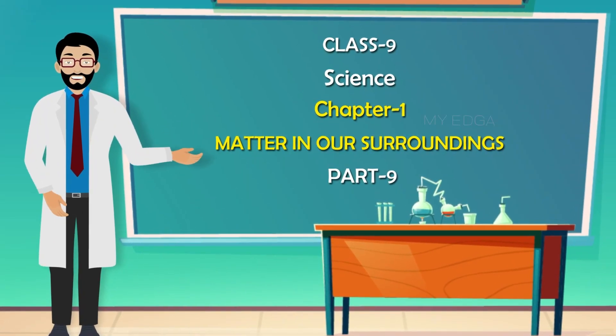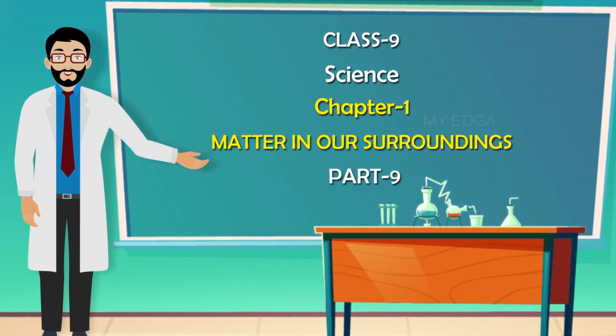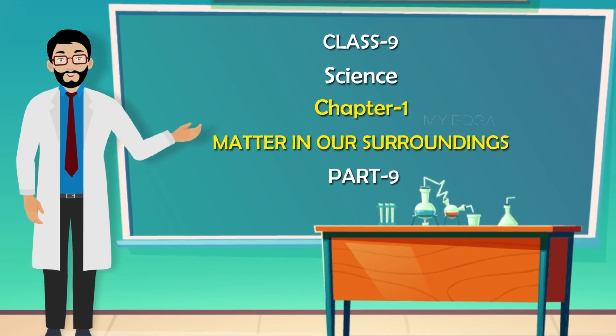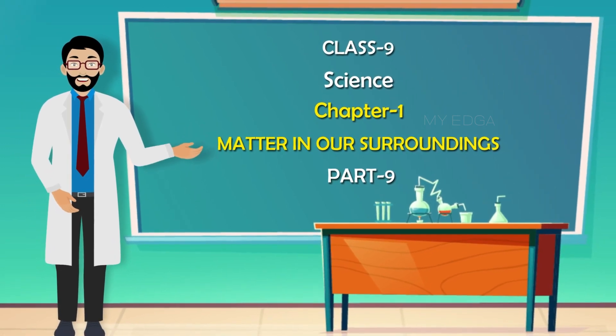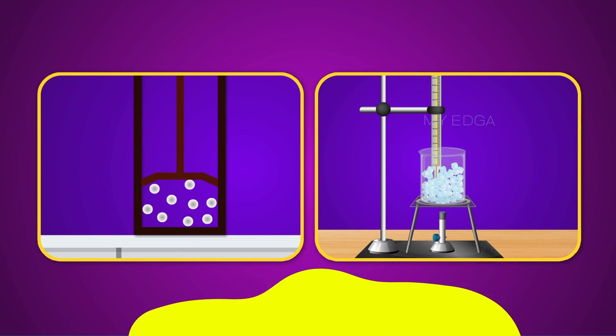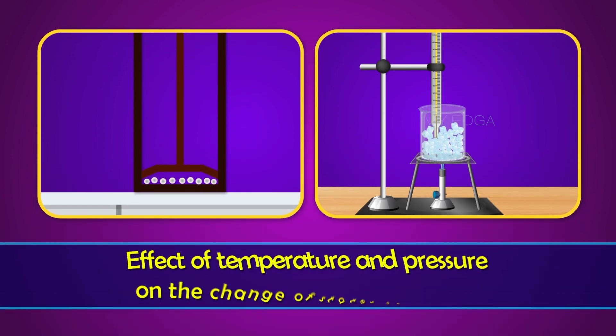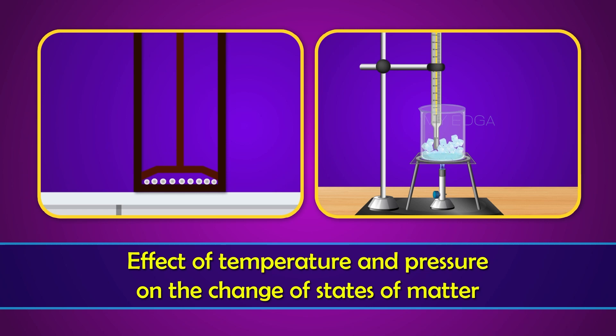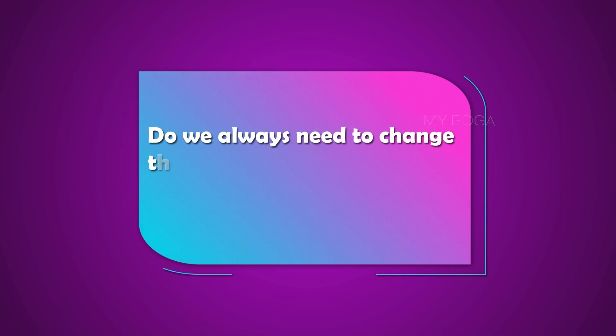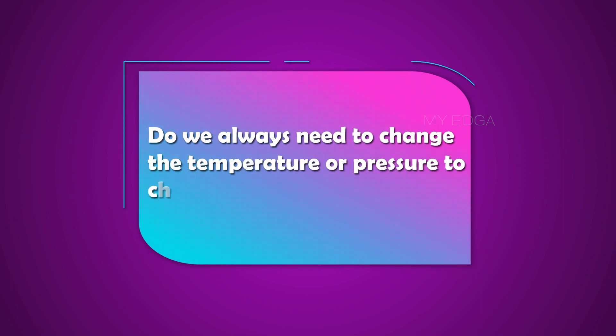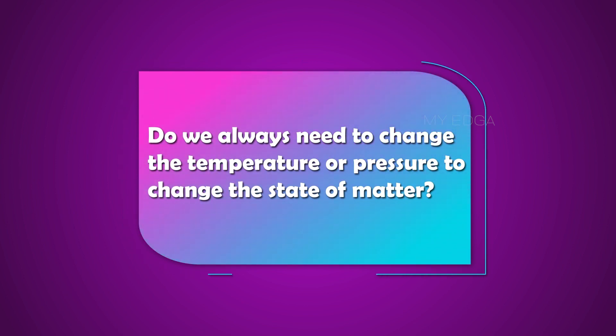Hello everyone, welcome to Class 9 Science videos of Chapter 1, Matter in Our Surroundings. In the previous videos, we have learned the effect of temperature and pressure on the change of states of matter. Do we always need to change the temperature or pressure to change the state of matter? Come, let us check it out in this video.